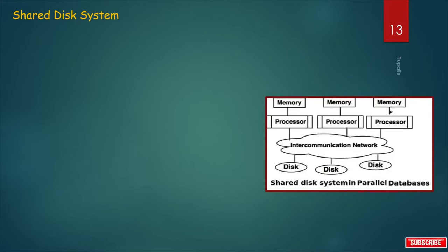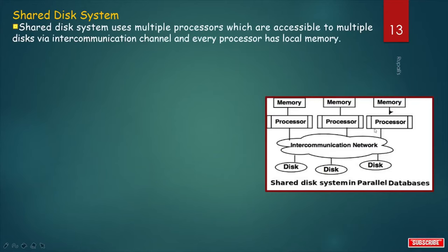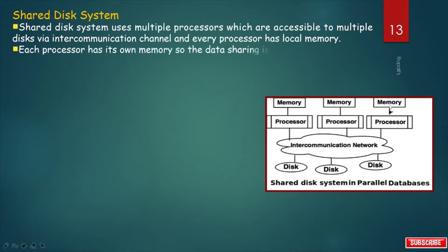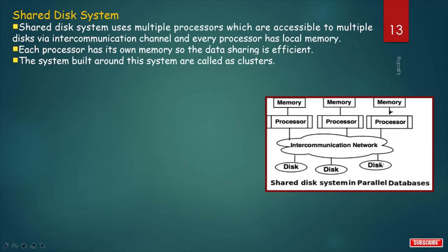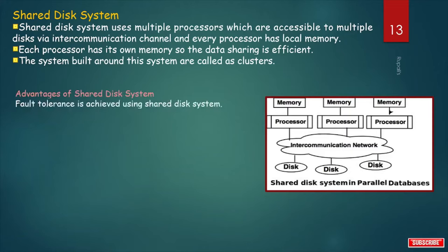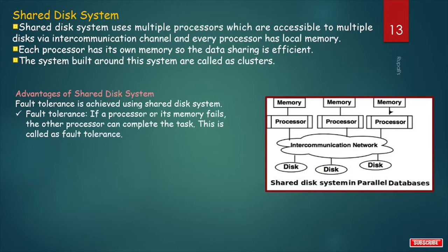Shared Disk System. In shared disk architecture, disks are shared among all available processors, and all processors have their own private memories. Shared disk system uses multiple processors accessible to multiple disks via an intercommunication channel, and every processor has its own local memory. Systems built around this architecture are called clusters. Advantage: fault tolerance is achieved — failure of any processor does not stop the entire system; if a processor or its memory fails, another processor can complete the task.